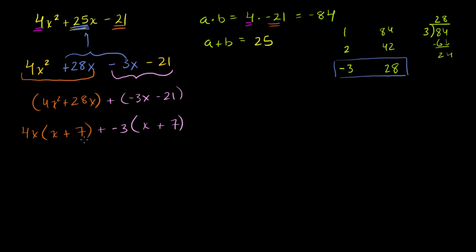And now, something might pop out at you. We have x plus 7 times 4x, plus x plus 7 times negative 3. So we can factor out an x plus 7. This might not be completely obvious. You're probably not used to factoring out an entire binomial, but you could view this, this could be like a. Or, you know, if you have 4xa minus 3a, you would be able to factor out an a. And I could just leave this as a minus sign.